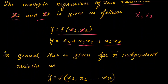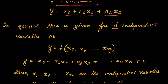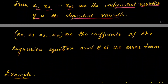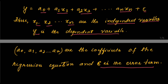In general, this can be given for n independent variables. We can write y equal to f of x1, x2, up till xn. The equation will be y equal to a0 plus a1 into x1 plus a2 into x2 up till an into xn plus epsilon. Here x1, x2, xn are the independent variables, y is your dependent variable, and epsilon is the error term. The coefficients a0, a1, a2, up till an are the coefficients of the regression equation.